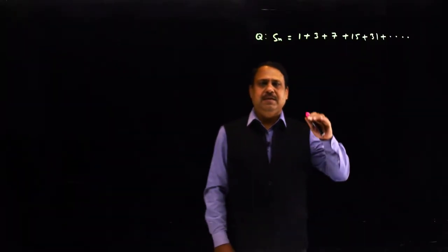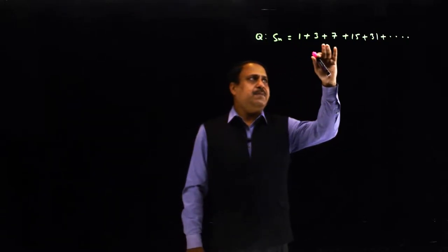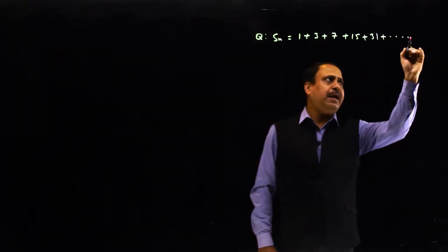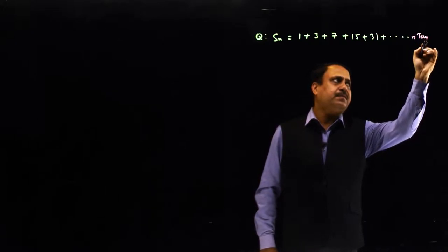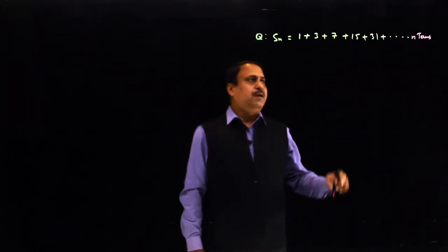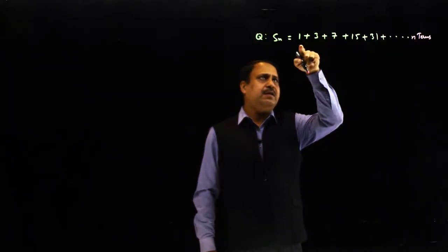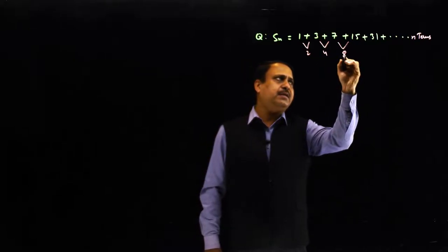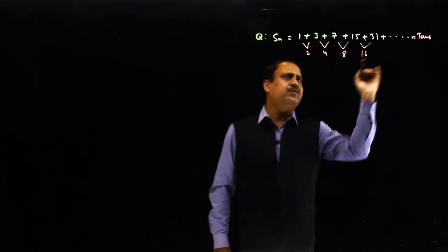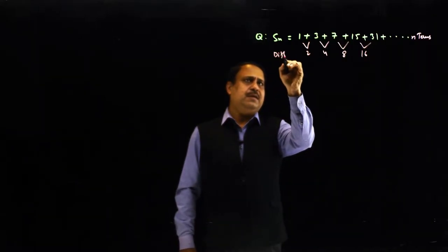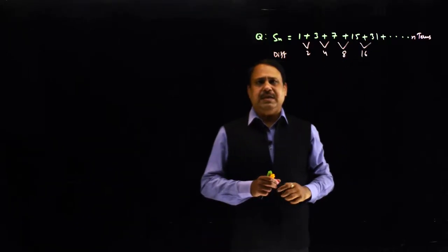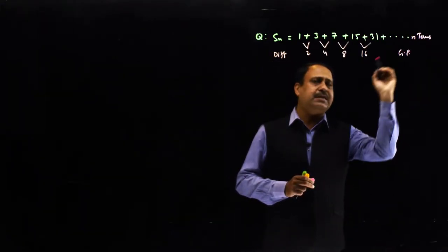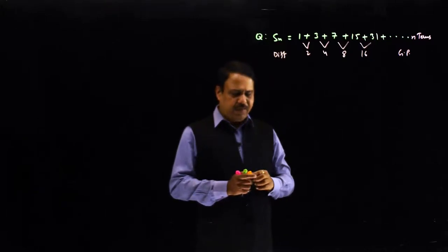Let us see this question: 1 plus 3 plus 7 plus 15 plus 31 — sum of n terms. We have to find the sum of n terms. You can directly observe: 3 minus 1, difference is 2; difference is 4; difference is 8; difference is 16, and so on. That means the original sequence is not in AP or GP, but the differences are in geometric progression.